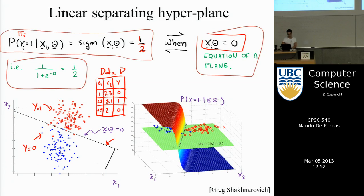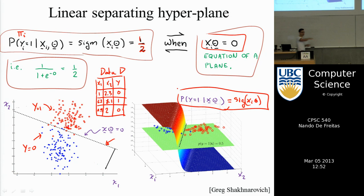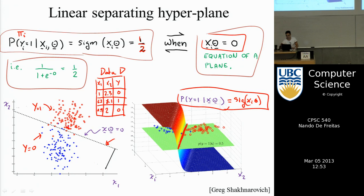In 3D, if we plot the curve p of y equal 1 given x and theta — which equals the sigmoid of x_i theta — in 2D this is an S-shape. If you cut that S at a height of one-half, that cut gives you a line. So logistic regression gives you a linear separating discriminant function that separates the red from the blue points.